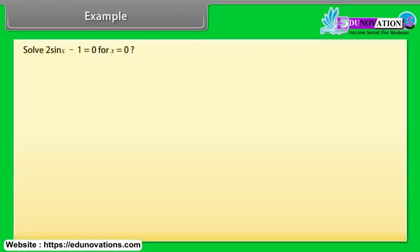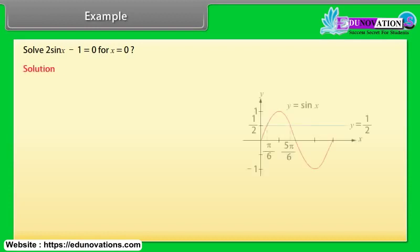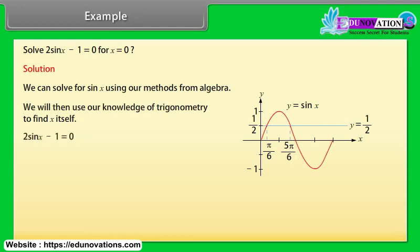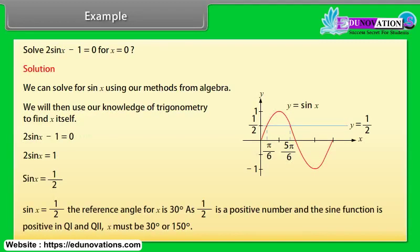Example: Solve 2sin x − 1 = 0. Solution: 2sin x = 1, so sin x = 1/2. The reference angle for sin x = 1/2 is 30°. Since 1/2 is positive and sine is positive in quadrants 1 and 2, x must be 30° or 150°.